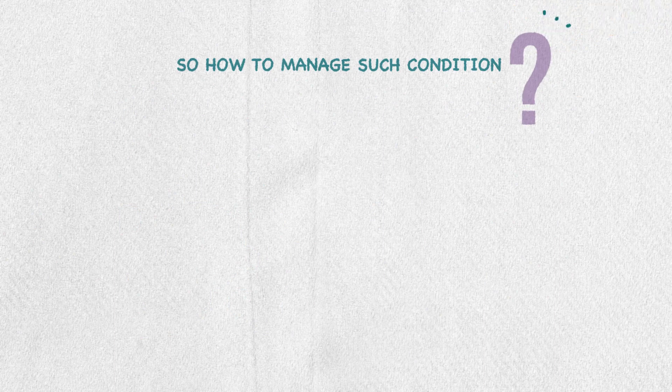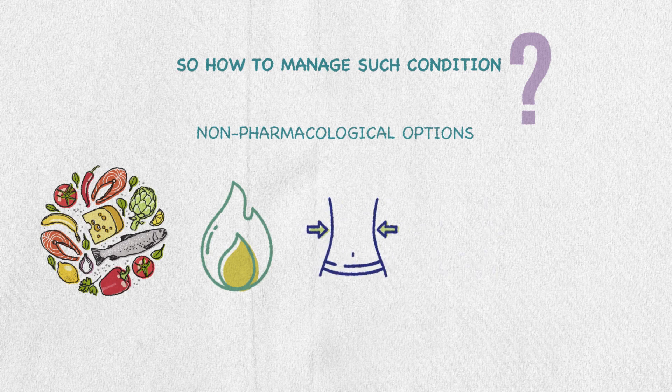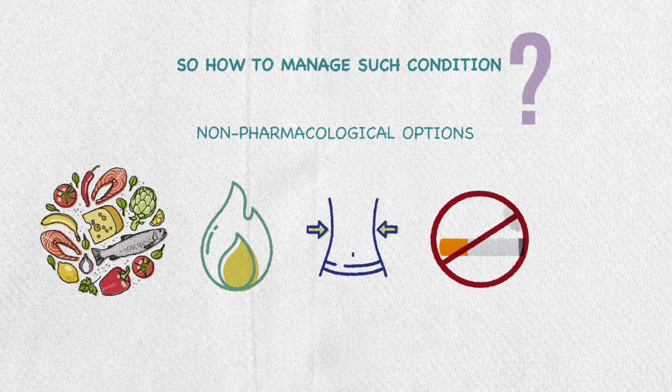So how do we manage dyslipidemia? First we have to consider the non-pharmacological options. A person must obtain a healthy diet that is rich in fruits, vegetables, and fibers, and limit the intake of saturated and trans fats. We must also encourage weight reduction, smoking cessation, and increasing physical activity. For the pharmacological options, we have six classes of medications, and each medication has a different mechanism of action.